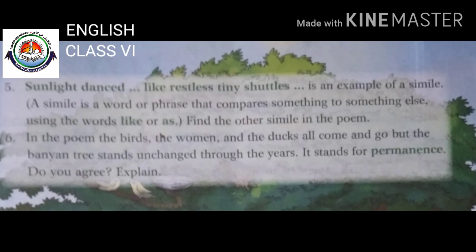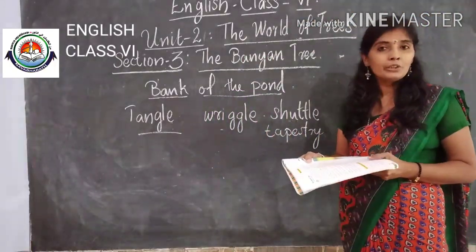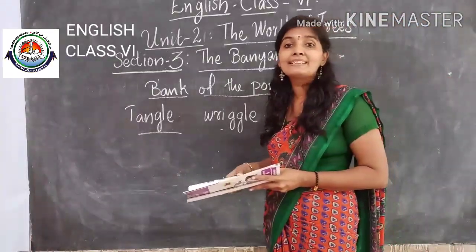Now let's have a look at simile — a poetic device used in the poem. The definition is already given in the text: it's a word or phrase that compares something to something else using words like 'as,' 'like,' etc. You are expected to find other similes in the poem and write them in your notebook. Be thorough with the poem — read it more than one time. Hope you are clear about the lesson. If you have any doubts, you can come to me during interaction time. Thank you, have a nice day.